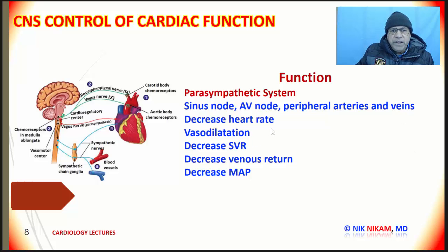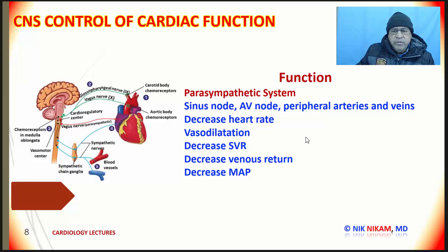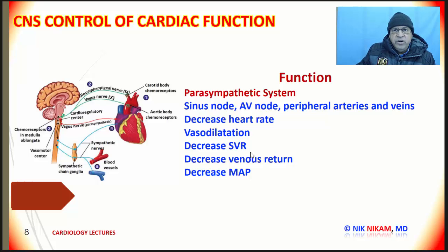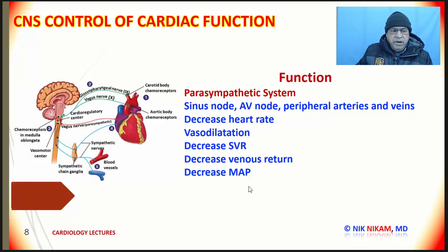Unlike sympathetic stimulation, parasympathetic stimulation leads to a decrease in heart rate. It causes vasodilation in both the arteries and veins, leading to profound hypotension. It decreases the systemic vascular resistance, reduces the venous return, and it also reduces the mean arterial pressure.